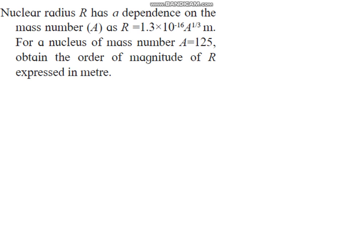Let us continue with the sums of chapter 1. In this question, they have given that nuclear radius R has a dependence on the mass number A, which is given by this relation: R equals 1.3 times 10 raised to minus 16, A raised to 1/3 meters. For a nucleus of mass number A equals 125, obtain the order of magnitude of R expressed in meters.